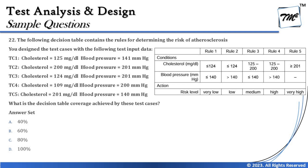Test case three has cholesterol 124 and blood pressure 201. This goes to rule two because cholesterol is less than or equal to 124 and blood pressure 201 is greater than 140. Test case four has cholesterol 109, which is less than or equal to 124, and blood pressure 200, which is greater than 140 — so that also goes to rule two. Both test cases three and four belong to rule two, meaning the same condition is being measured twice.